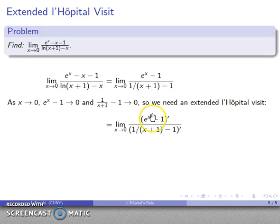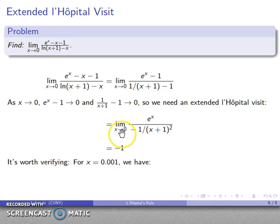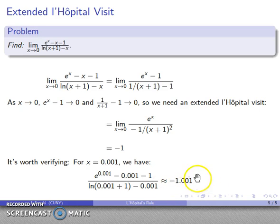I have a 0 over 0 form, so the limit is going to be the derivative over the derivative. Derivative of e^x minus 1 is e^x. Derivative of 1/(x+1) minus 1 is minus 1/(x+1)^2. As x gets close to 0, numerator gets close to e^0 which is 1. Denominator gets close to minus 1 over 1 squared, negative 1. And the quotient is negative 1. And because it's on the internet, it must be true. Again, we might want to check it out. For x equals 0.001, we have e^0.001 minus 0.001 minus 1 over ln(0.001 + 1) minus 0.001. There's our expression. If x is close to 0, our expression is approximately negative 1.001, and that does look like we have evidence that supports this limit.